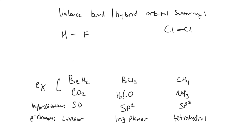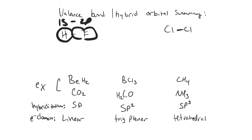Morning everybody. We're going to continue along into chapter 9. I thought we'd start with a summary of valence bond theory — a reminder of what it is and what we're trying to do. So in valence bond theory, when we have a single bond between two atoms, it's easy to describe. For HCl, the largest orbital of hydrogen is a 1s orbital, and the largest orbital of chlorine is a 2p orbital, so we'd have a 1s–2p overlapping set of orbitals.